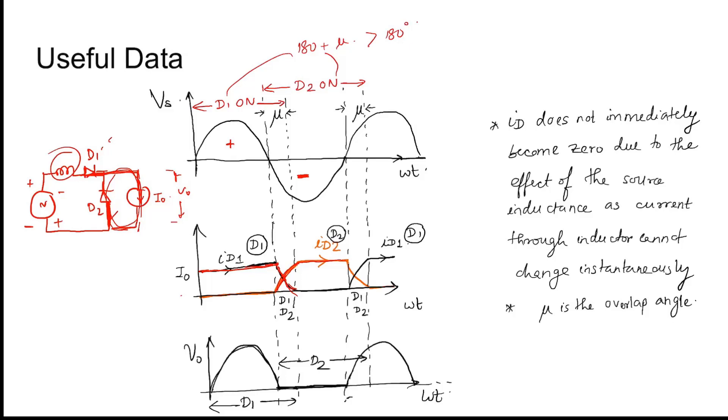So when D2 is on, this is shorting the load side. So this is 0. So as a result, the diode D1 is actually on for more than 180 degree because of this inductor as the current cannot be 0 instantly. And same for D2, it is on for more than 180 degree.